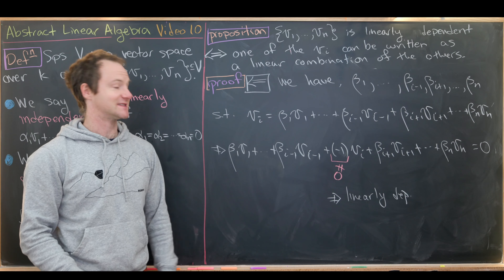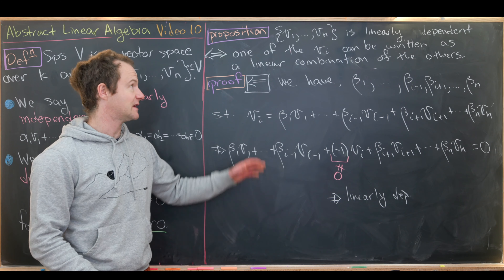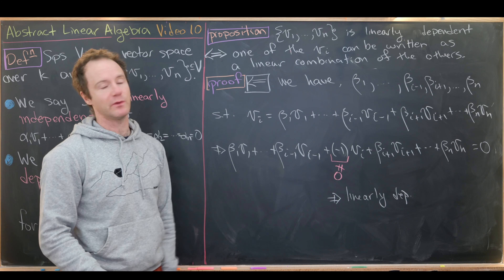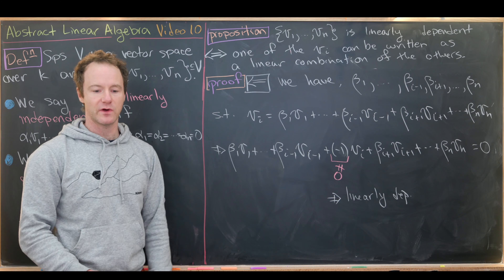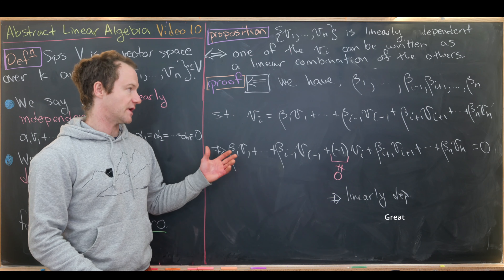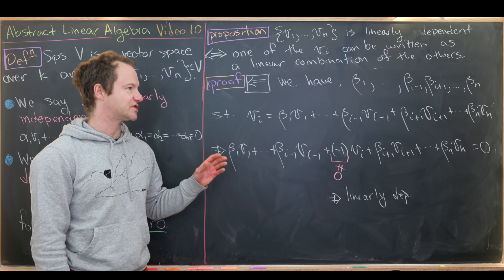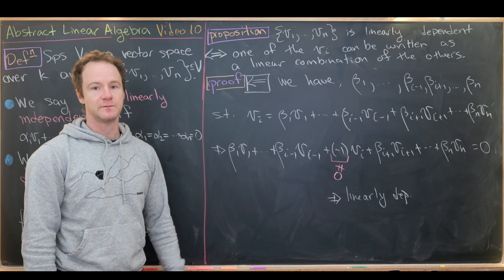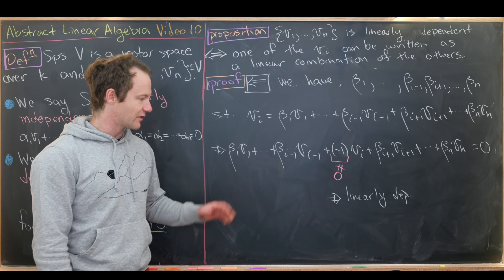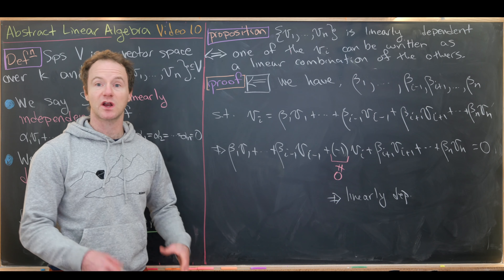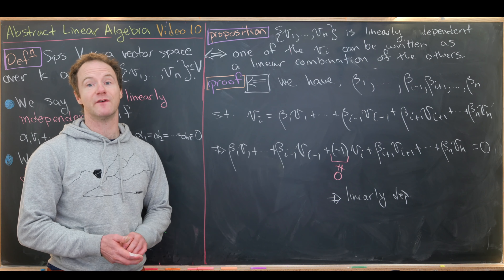That finishes the proof. Now we're going to look at the notion of a basis. A collection of vectors B, a subset of V, is called a basis for V if it satisfies two properties: the set B is linearly independent, and the span of the vectors in B equals V.